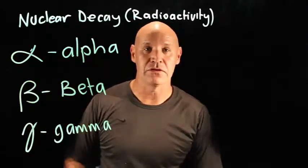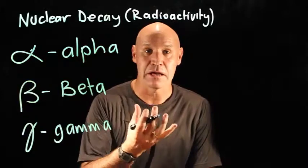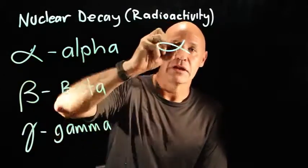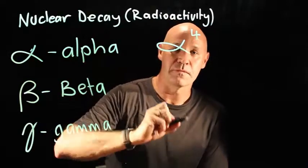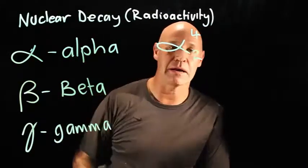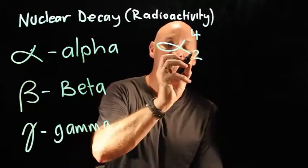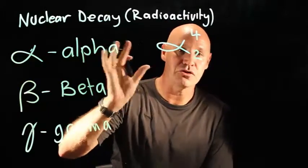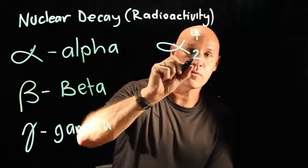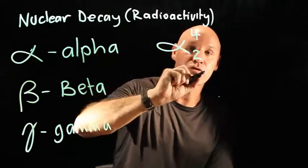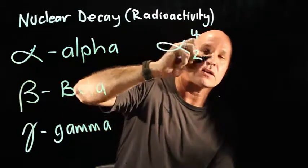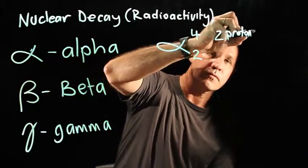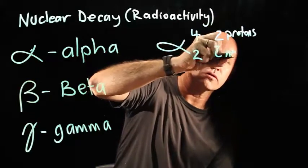An alpha particle is quite a heavy particle. An alpha particle actually has a mass of four and an atomic number of two. So what does that mean? It means that the alpha particle, the thing that gets ejected from the nucleus, actually has two protons and two neutrons.